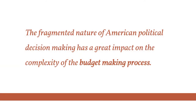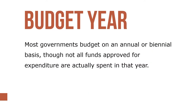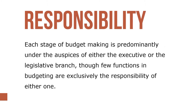The fragmented nature of American political decision-making has a great impact on the complexity of the budget-making process. Most governments budget on an annual or biannual basis, though not all funds approved for expenditure are actually spent in that year. Each stage of budget-making is predominantly under the auspices of either the executive or the legislative branch, though few functions in budgeting are exclusively the responsibility of either one.